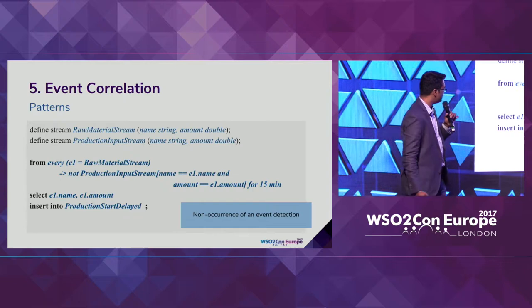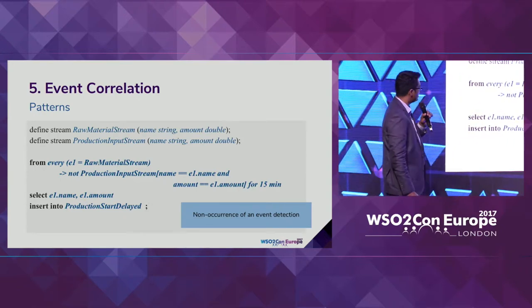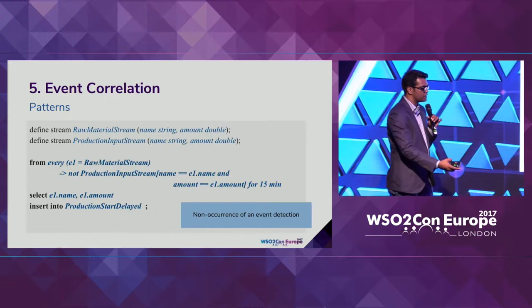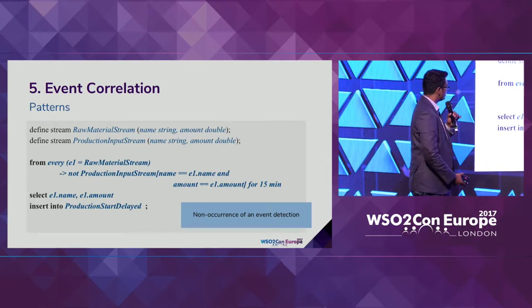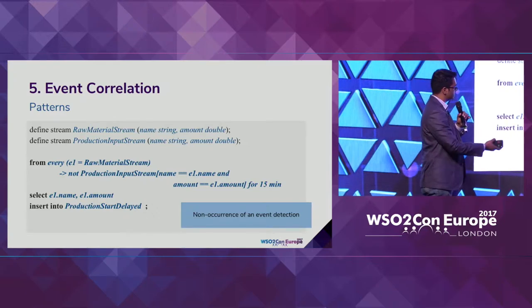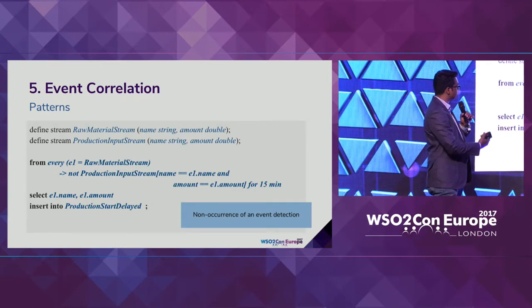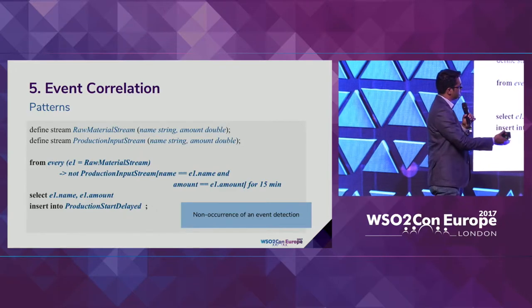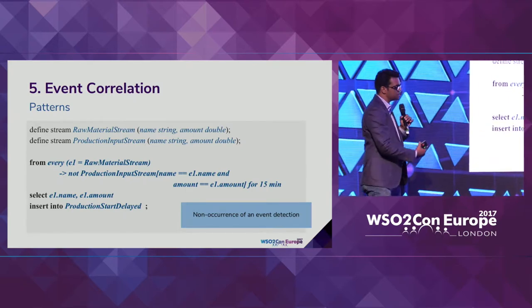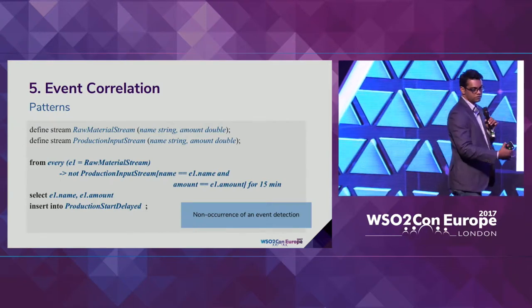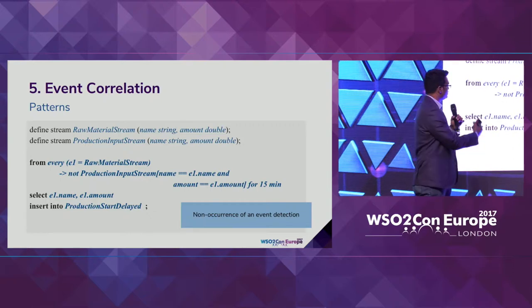Here we have two streams: a raw material stream with name and amount, and a production input stream. Whenever a raw material comes into the system, production should start immediately. If, following a raw material stream event, we do not find a corresponding production input stream event for the same raw material and amount within 15 minutes, we generate an alert. This is a non-occurrence pattern — the raw material arrived but was not processed within 15 minutes.